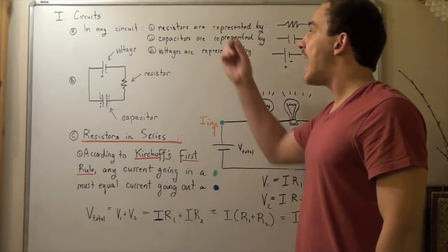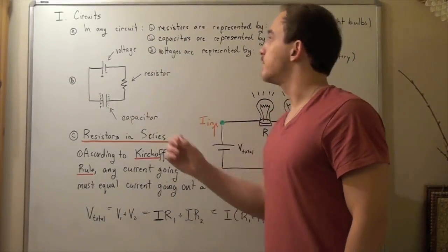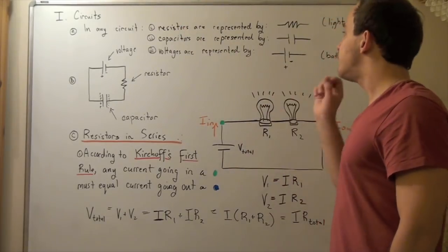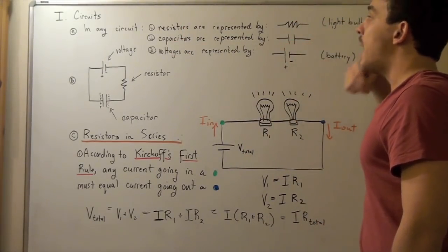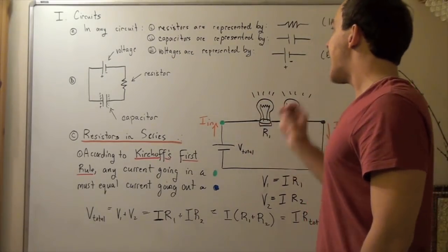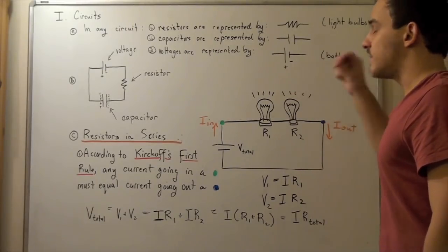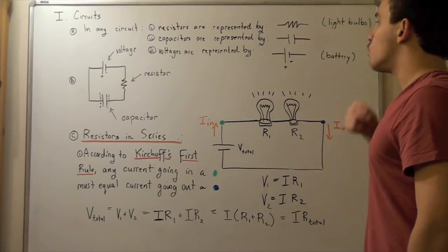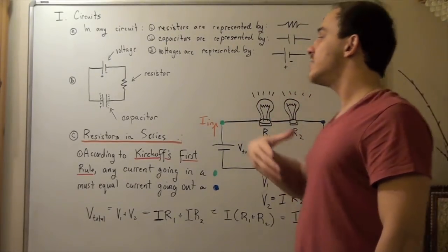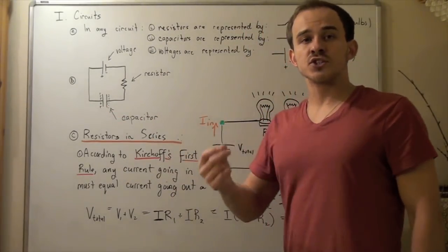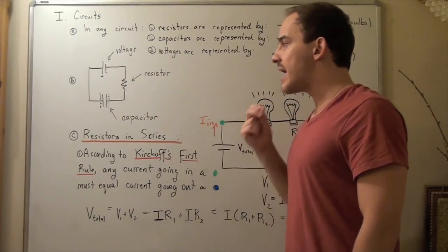Let's first see how these components are represented in terms of symbols on our electric circuit. Resistors have the following symbol. Capacitors have this symbol — or parallel plate capacitors. And voltages have the following symbol, where the long line represents a positive cathode and the short line represents our negative anode. So voltages are simply batteries. Here's one example of an electric circuit that contains one battery, one resistor, and one capacitor.